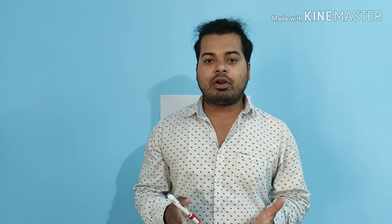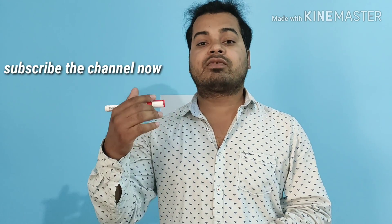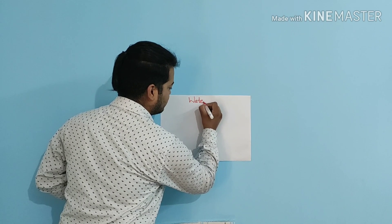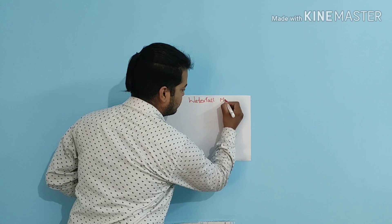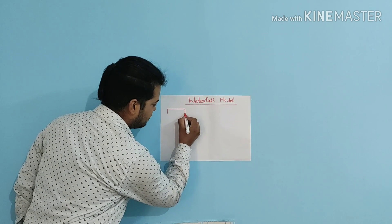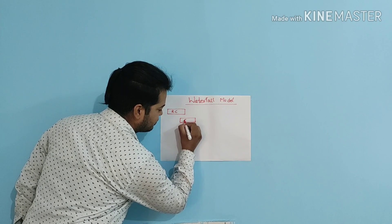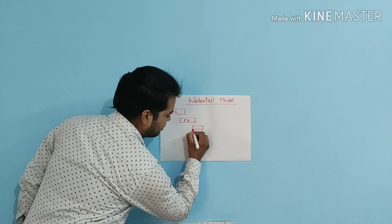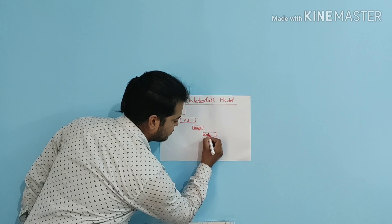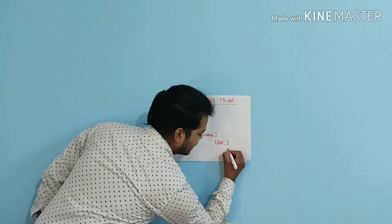In the waterfall model as a software development lifecycle, there are seven phases. The first stage is called requirement collection, then comes the feasibility study, then comes the design, then comes the coding, then comes the testing, and then comes the installation.